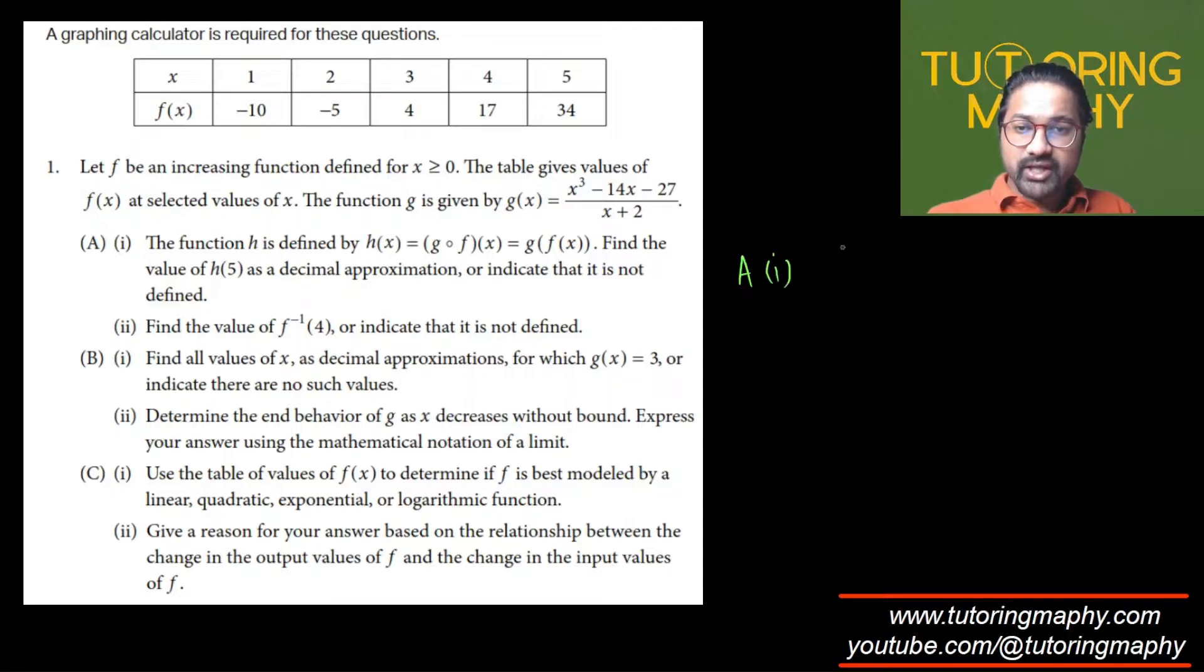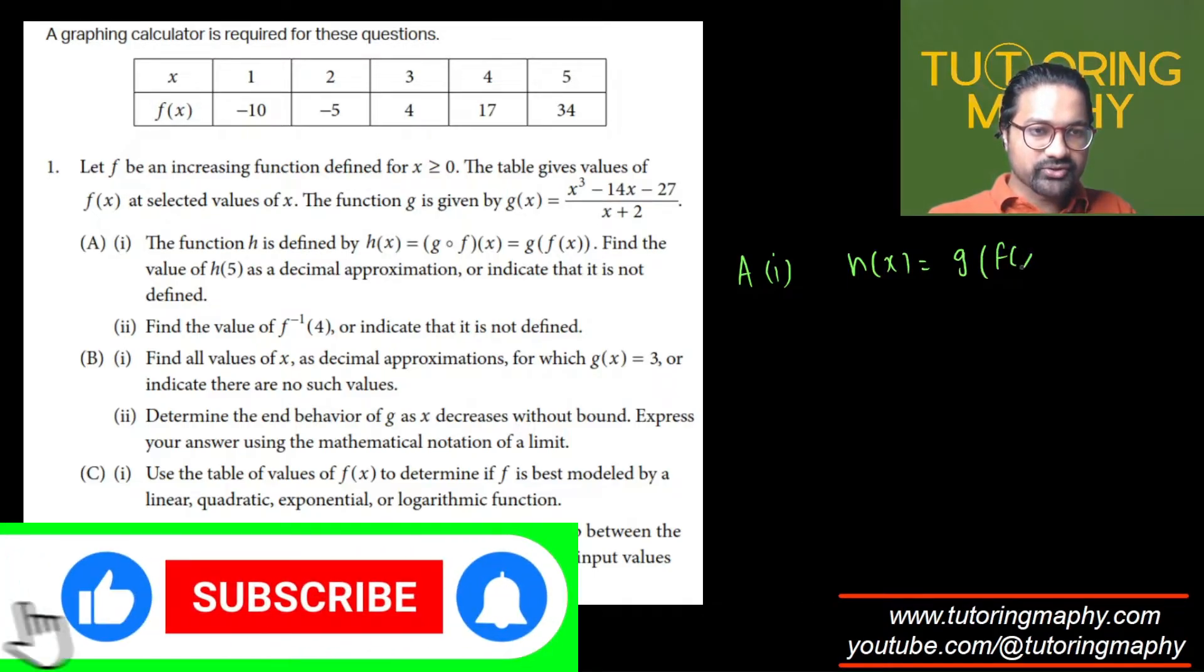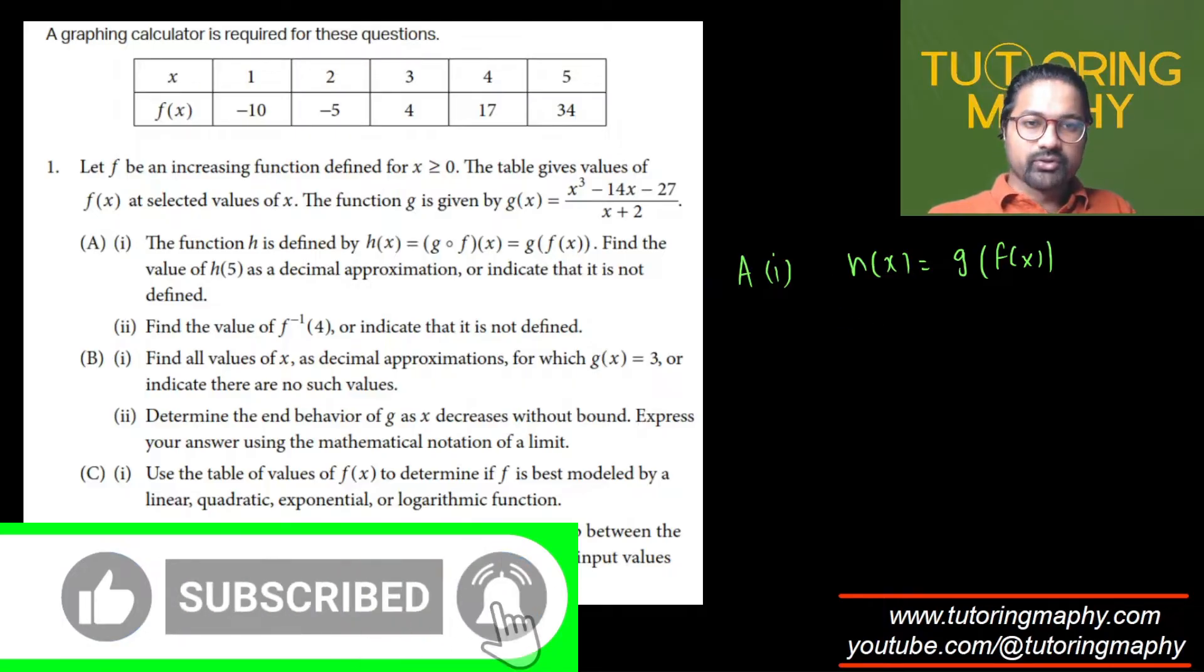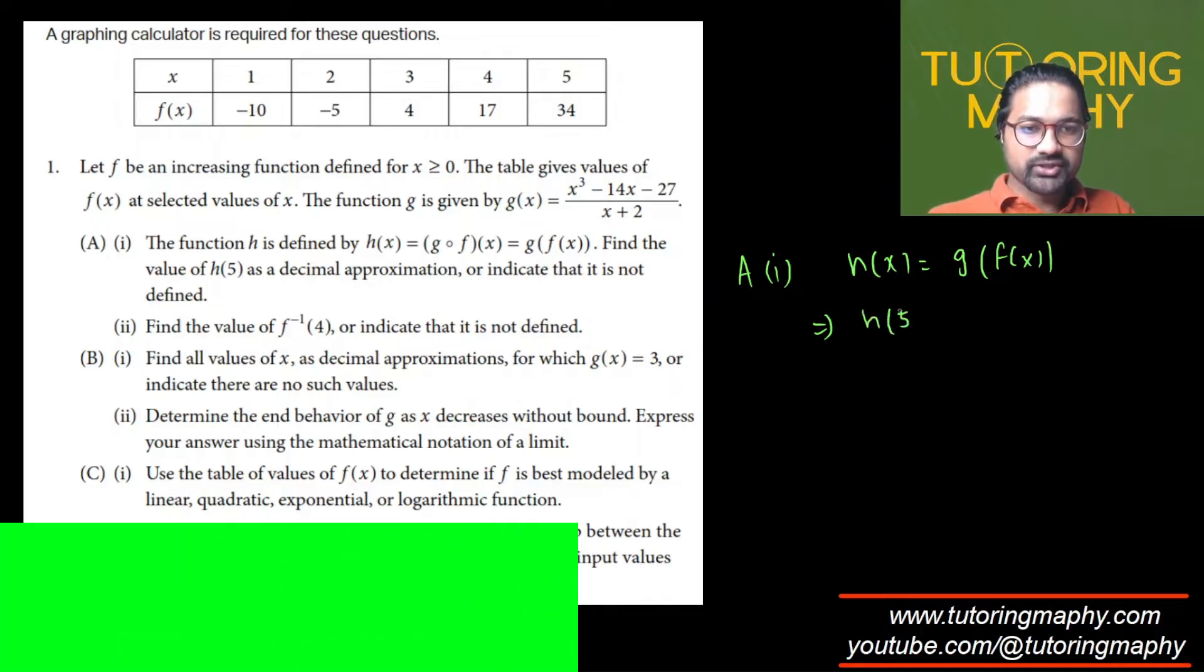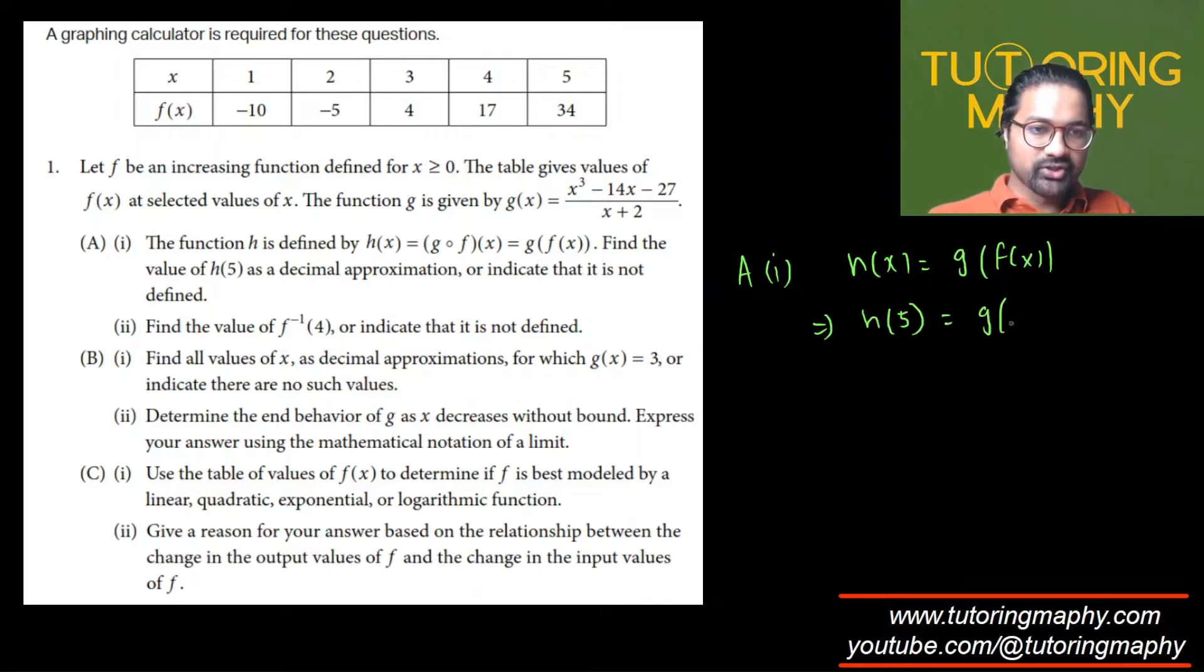H(x) is G of f(x). We're supposed to find H(5), so we replace x with 5. H(5) will be G of f(5). What is f(5)? Look at this table, locate 5, and corresponding to 5 we have the value of the function as 34. So we're going to write G(34).